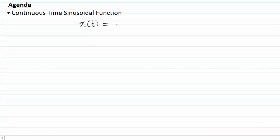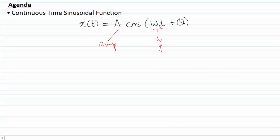Hello guys, in this video I'm going to talk about sinusoidal functions in the context of continuous time, and in the next video I'm going to talk about sinusoidal functions in the context of discrete time. The generalized equation for a continuous time sinusoidal function is x(t) = A·cos(ω₀t + θ), where A is the amplitude, ω₀ is the frequency, and θ is the phase shift of x(t).